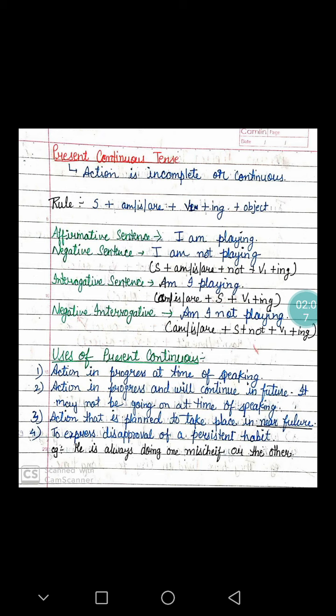Shyam is going to market. While I am speaking, I am talking about Shyam who is in the process of going to the market. Kavita is making Dhokla. What is Kavita doing right now? She is making Dhokla — she is in the process of making the Dhokla. The Dhoklas are not yet complete. She will complete that action in the near future — it is just about to complete.